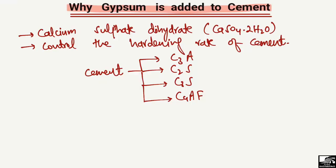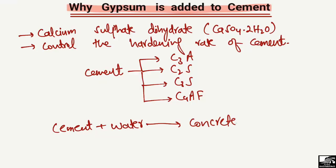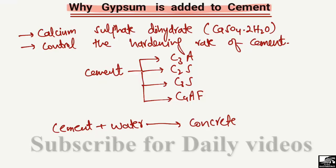In the construction of concrete, we basically put the cement and add water to it, along with other components like sand, fine aggregate, and some admixtures to help the concrete. But the two most important components are the cement and water.